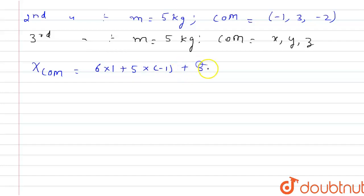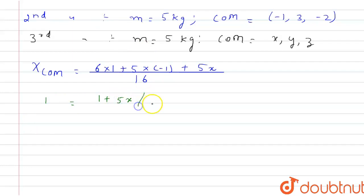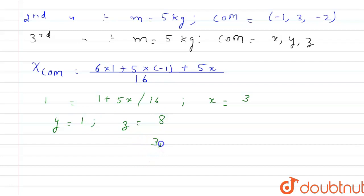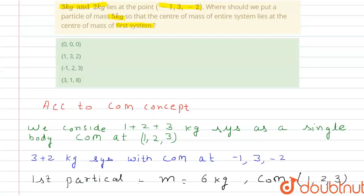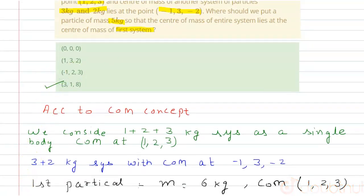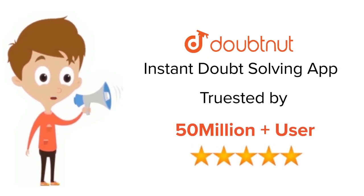Setting up the equation and putting in the values: 1 = (1 + 5x) / 16, solving gives x = 3. Similarly solving for y gives y = 1, and for z gives z = 8. So the final answer is (3, 1, 8). Checking the options, the fourth option is correct. Thank you. For class 6 to 12, IIT JEE and NEET level, trusted by more than 5 crore students — download the DoubtNet app today.